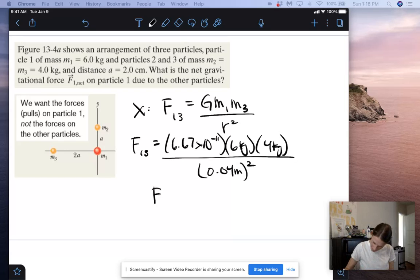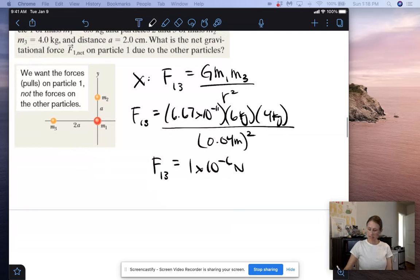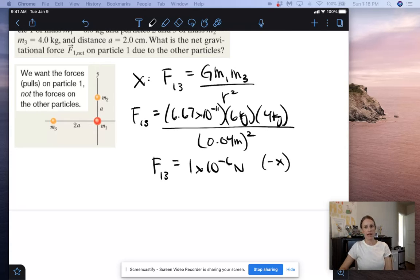And we end up getting force on particle 1 from particle 3 is equal to 1.0005, so about 1 times 10 to the negative 6 newtons. And then this is in the negative x direction. So I'm just going to make a little note there that that's in the negative x direction.